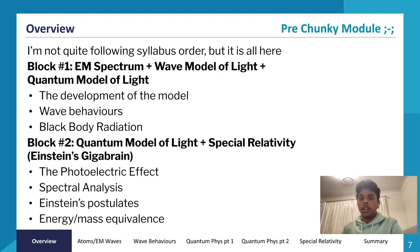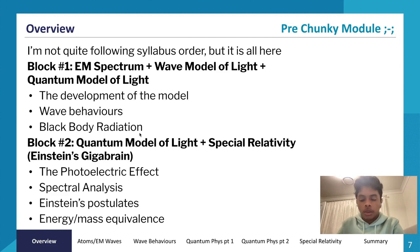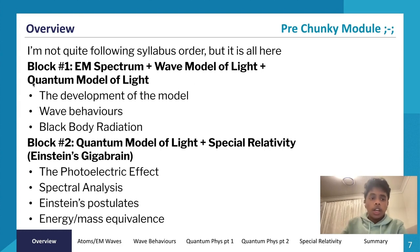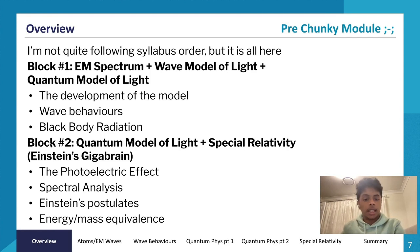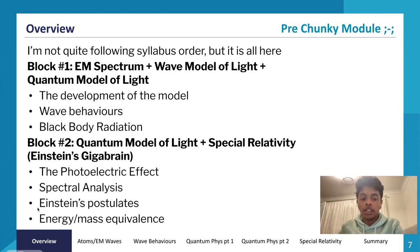Now let's get into the lecture overview. We're covering Module 7 — it's a chunky module. In our first block we'll cover the electromagnetic spectrum, the wave model of light, and the quantum model of light, including the development of models of light, wave behaviors, and black body radiation.